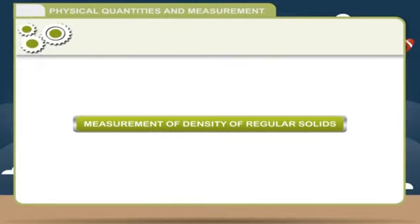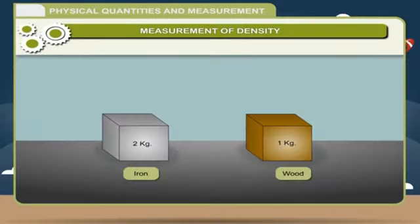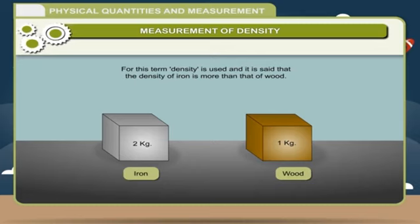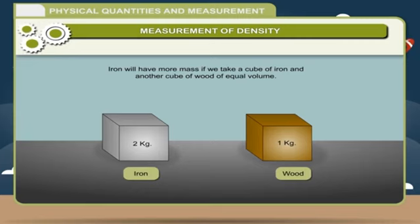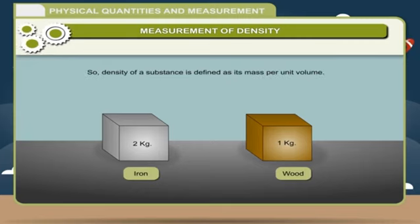Measurement of density: It is normally said that iron is heavier than wood, meaning iron has more mass than wood if both are of the same volume. For this comparison, the term density is used — the density of iron is more than that of wood. Thus, the heaviness or lightness of a substance is compared by taking the same volume of each. Density of a substance is defined as its mass per unit volume.